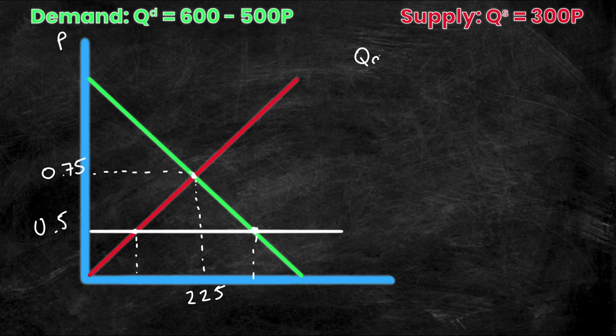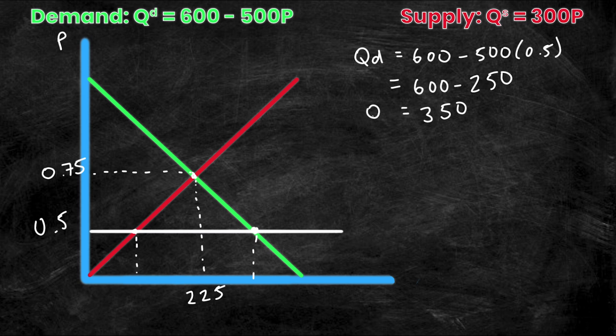Well, we're going to do the same thing that we did before. We're going to sub this new price, this one down here, into both the QD and the QS equations, and we'll see where these two intersections are made. So we sub this into QD, then we get 600 minus 500 times 0.5, which is 600 minus 250, which is equal to 350.